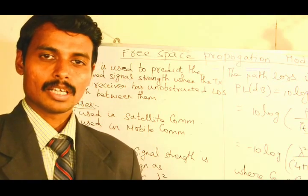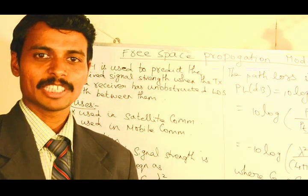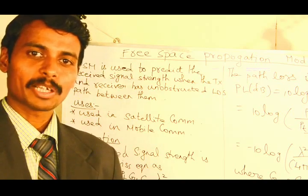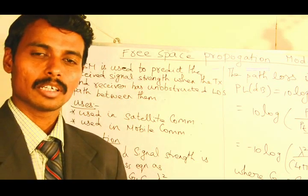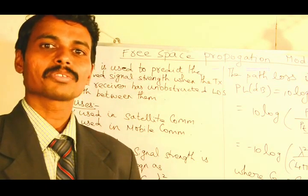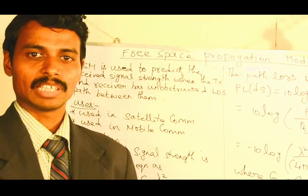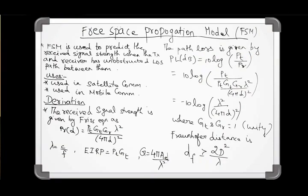The last topic is the free space propagation model. The free space propagation model is used to predict the received signal strength when there is an unobstructed line-of-sight between the transmitter and the receiver. Whenever a line-of-sight path is available, the free space propagation model is used. It is mainly used in applications like mobile communication and satellite communication.